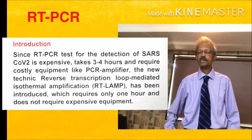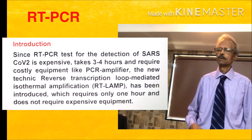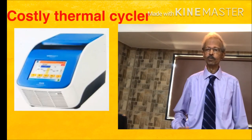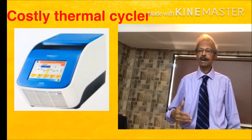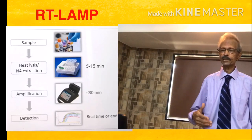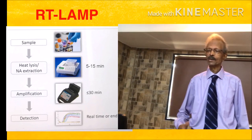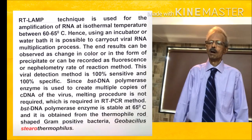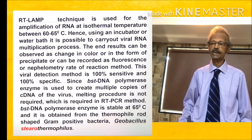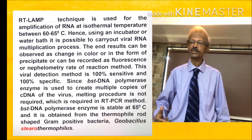Since the RT-PCR test for detection of SARS-CoV-2 is expensive, it takes 3-4 hours and requires costly equipment like a PCR amplifier. That is why the new technique RT-LAMP has been introduced, which requires only 1 hour and does not require expensive equipment. RT-LAMP technique is used for the amplification of RNA at isothermal temperature between 60-65 degrees centigrade.